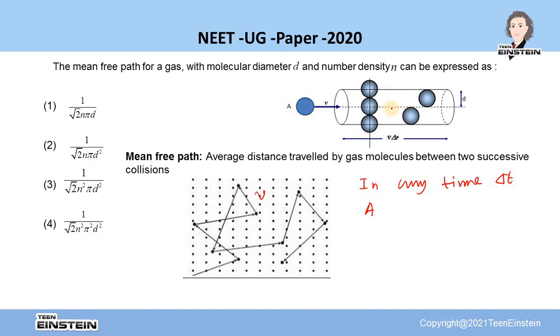So what is the volume of the cylinder? The volume of the cylinder is πd²v·Δt. This is the volume of the cylinder.